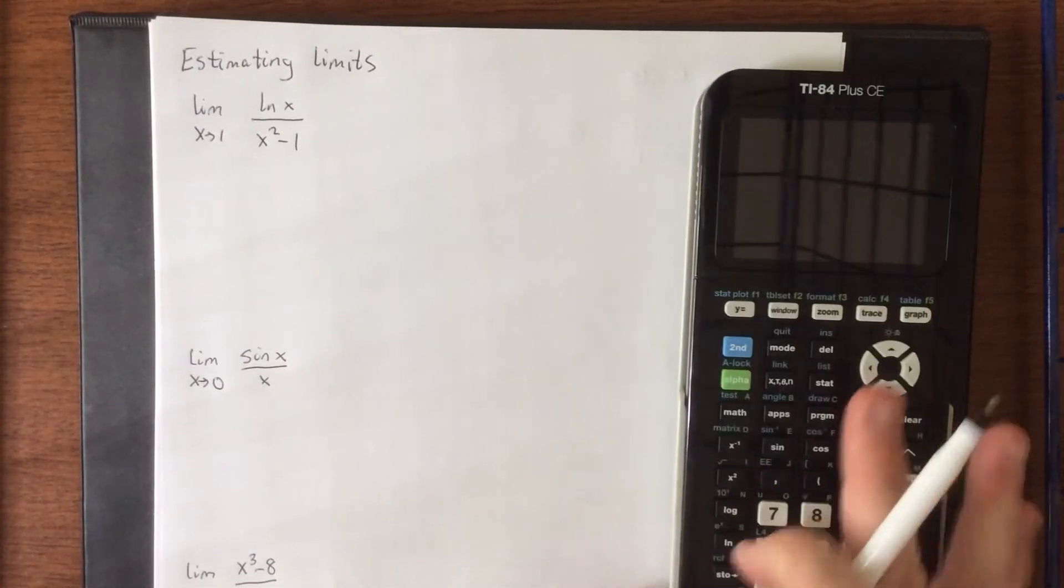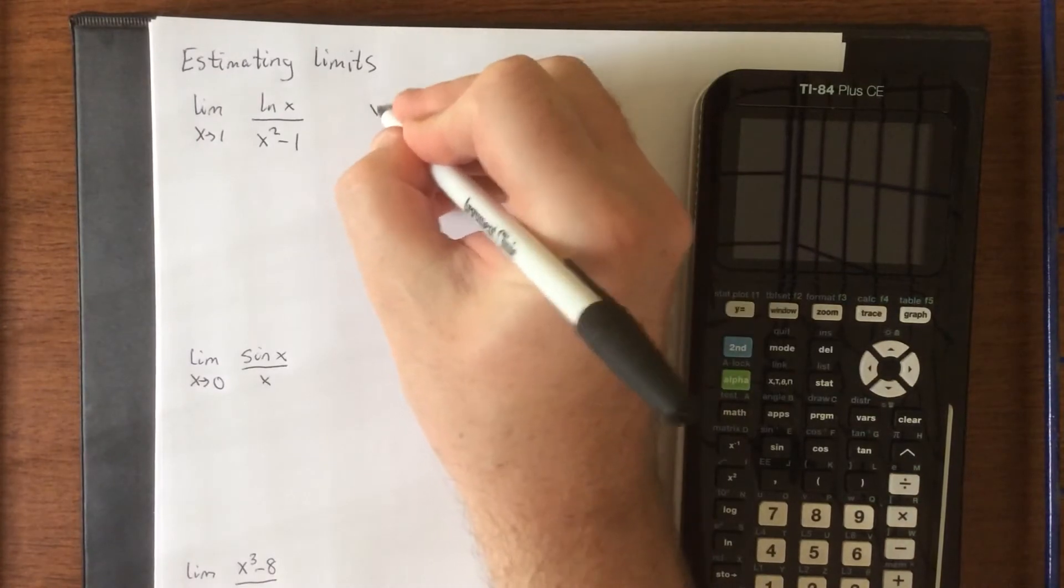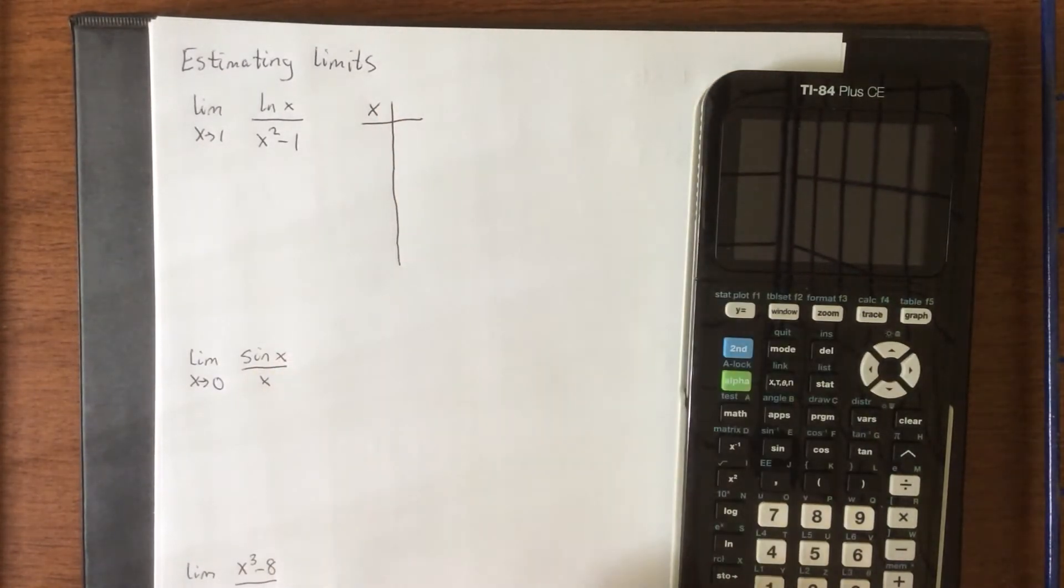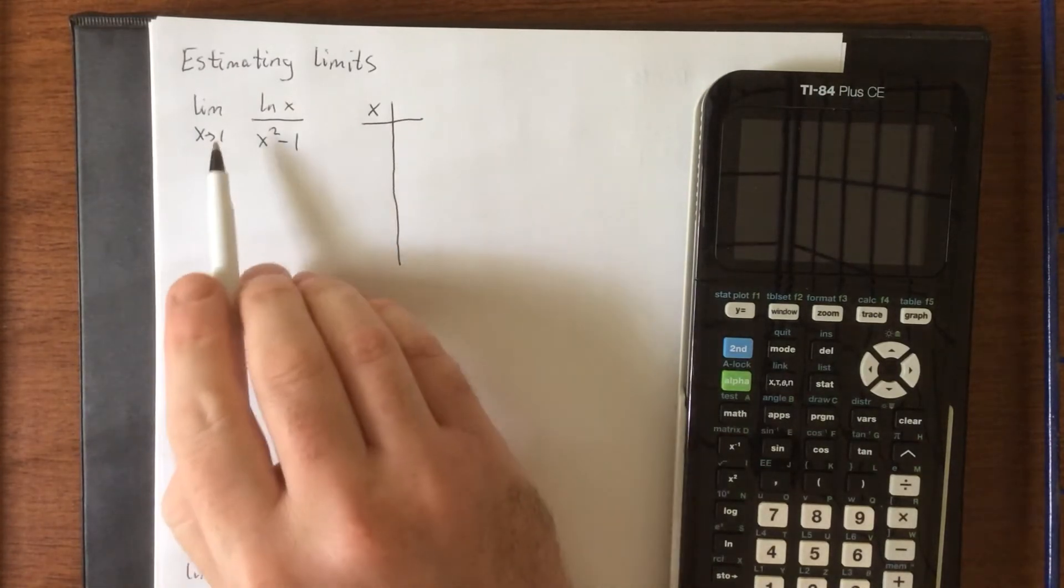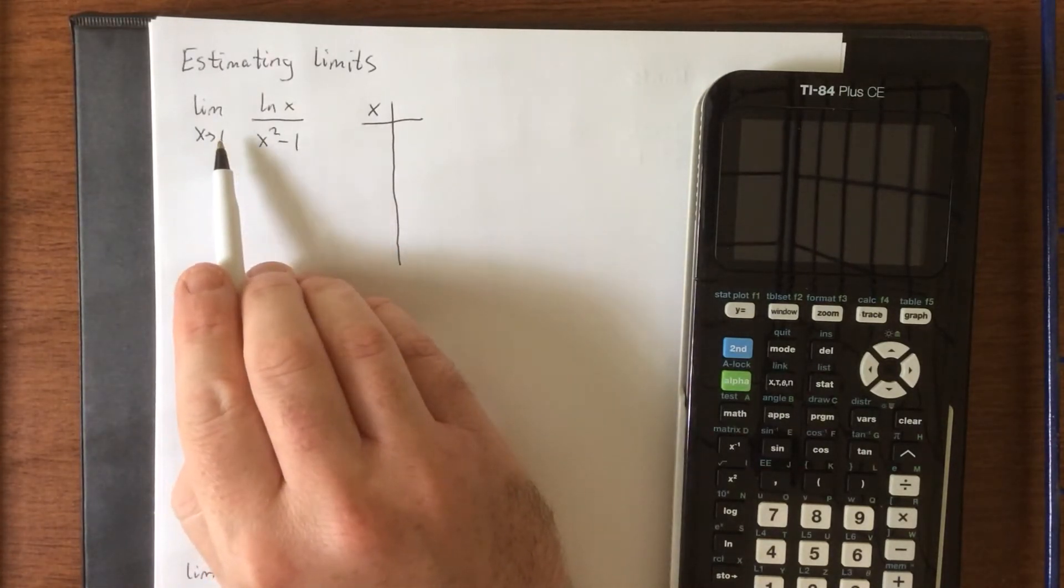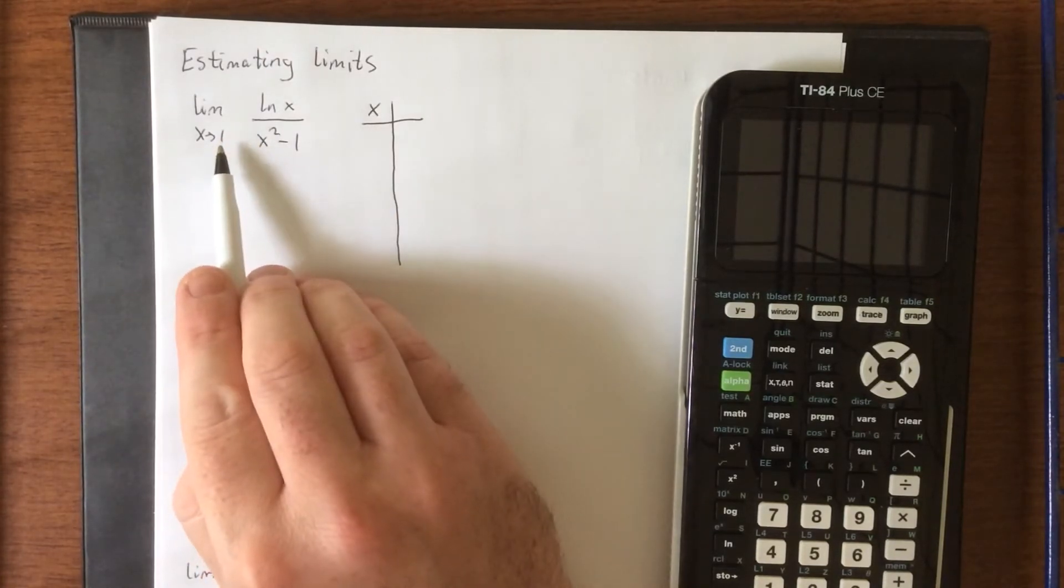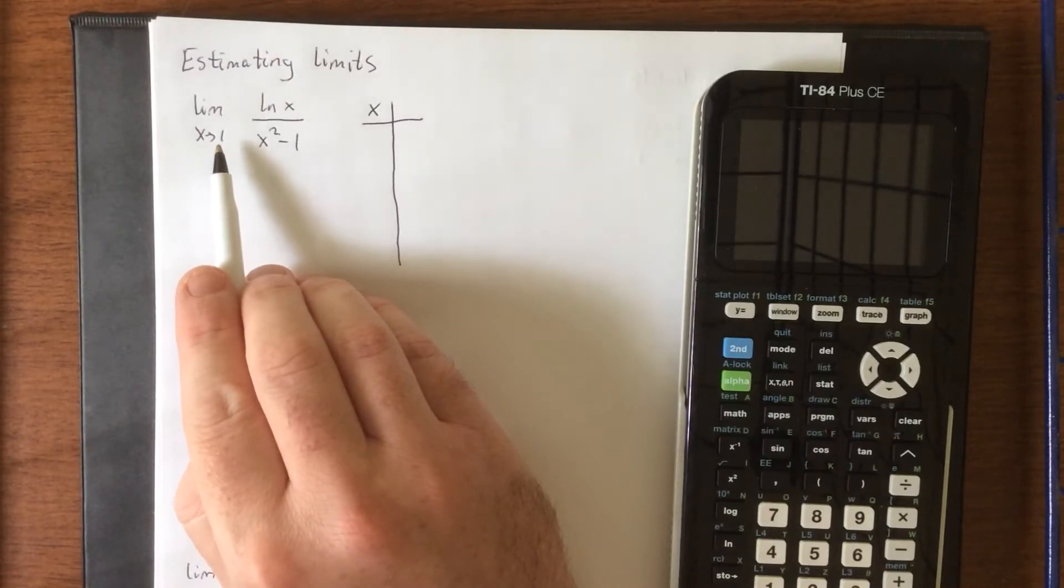So for the first limit here, we have the limit as x approaches 1. Now, our book recommends that you use a total of six different values. Whatever your starting point is, deviate from that either in the positive or the negative direction by 0.1 units, 0.01 units, and 0.001 units.